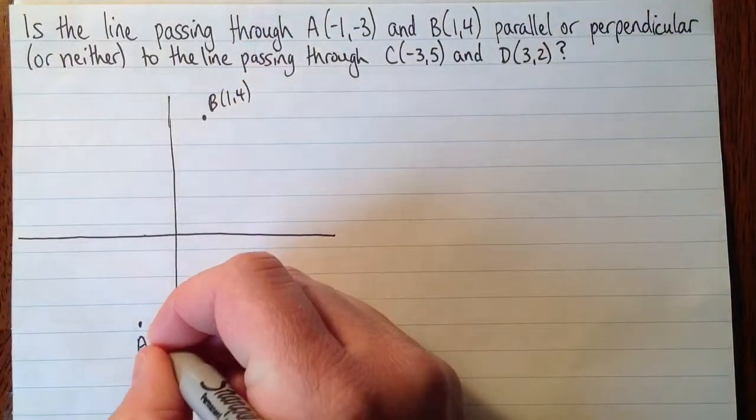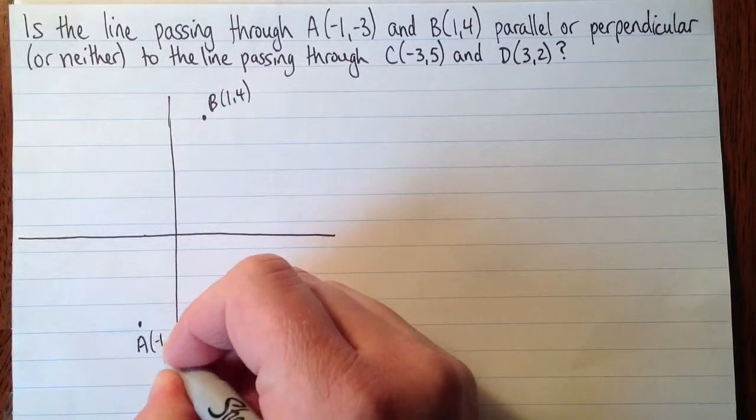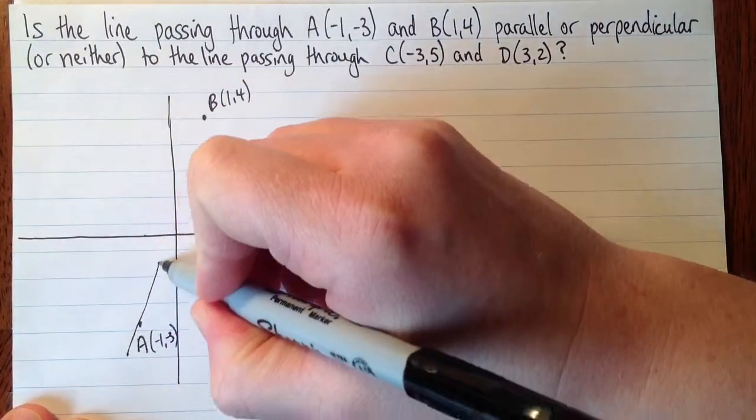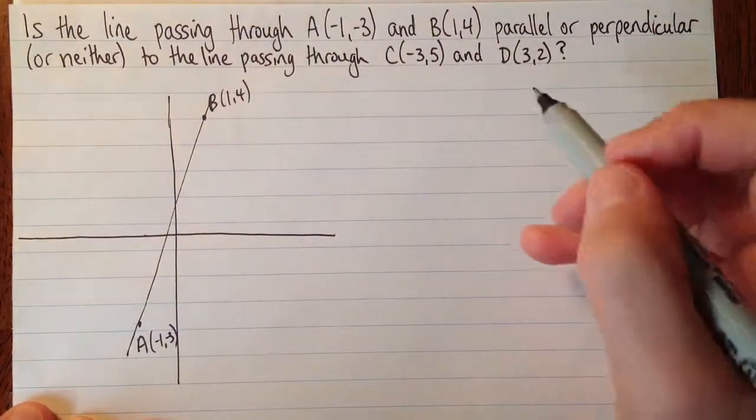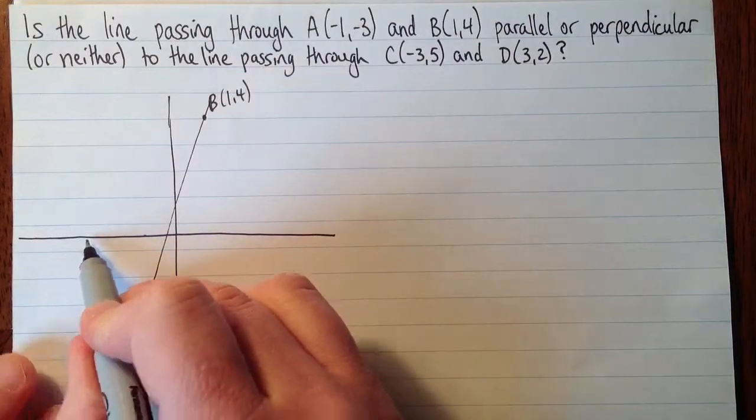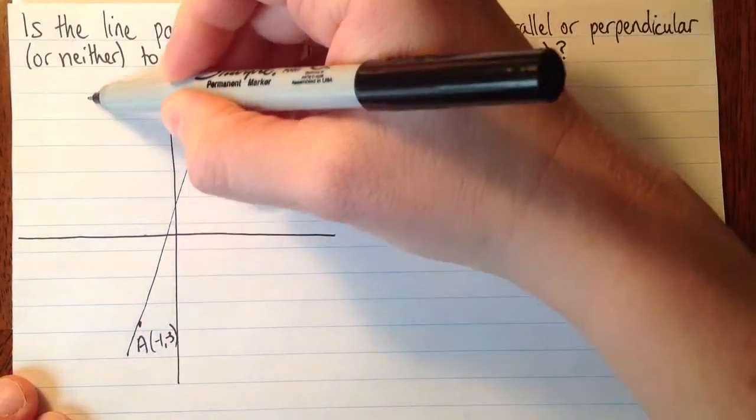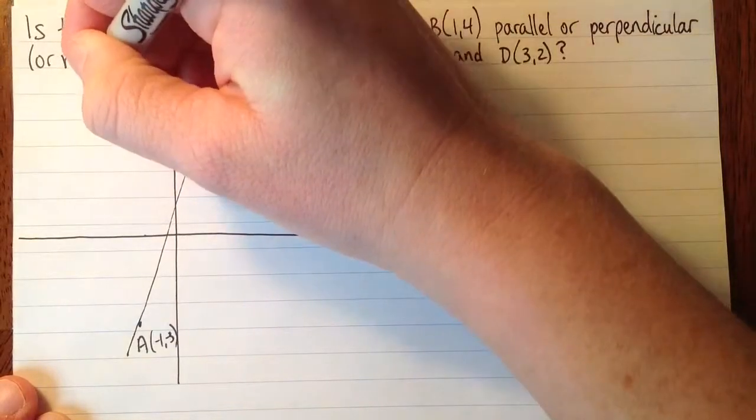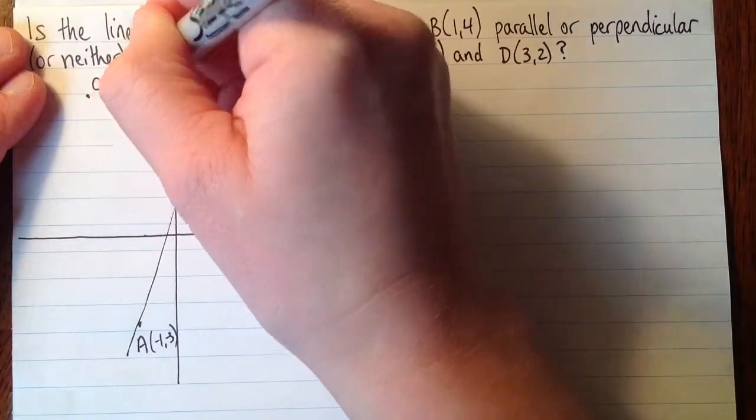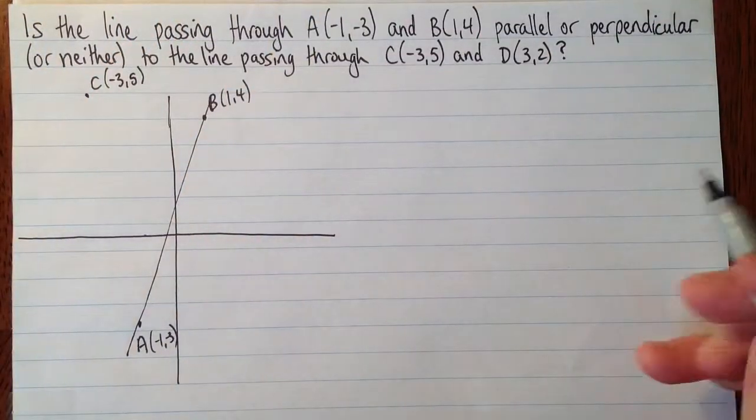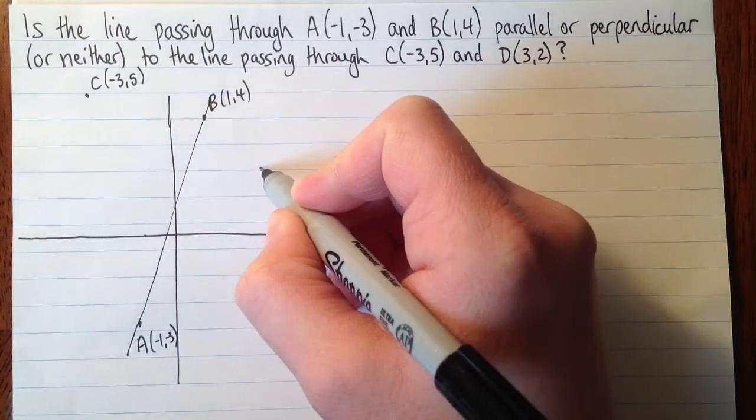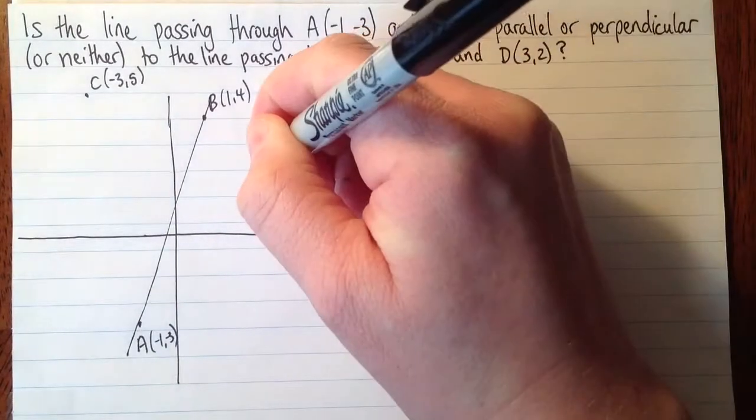Maybe I'll label these. (-1, -3). Okay. And so this line we're talking about, is that parallel or perpendicular to the one that goes through C? So C is (-3, 5). So it's going to be about over here, and it'll be up a little bit higher than me. And then D is (3, 2), so about here.